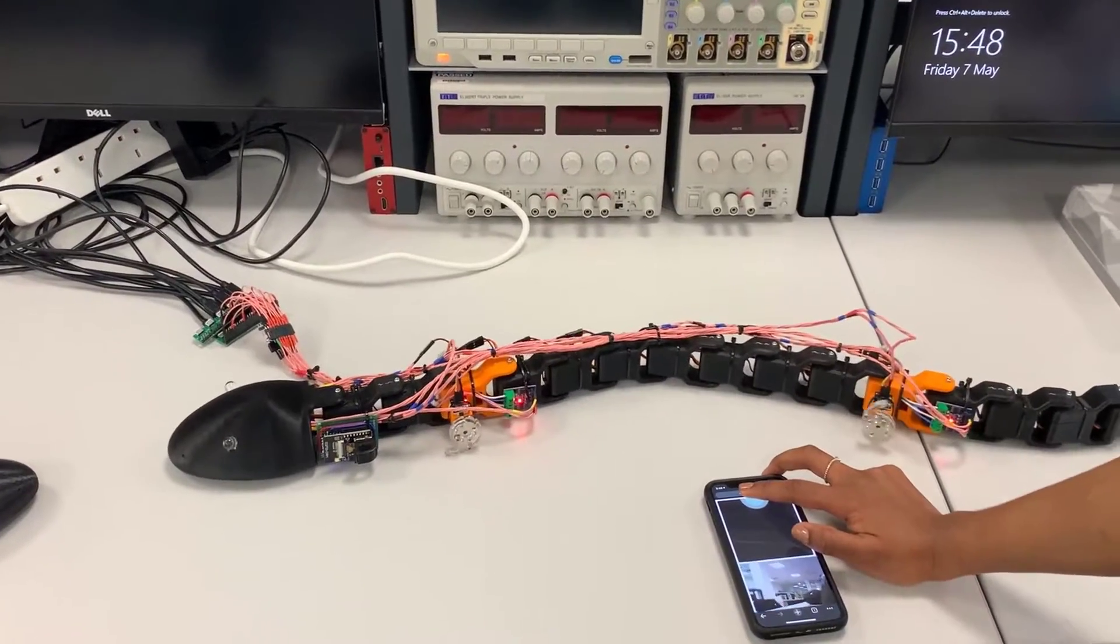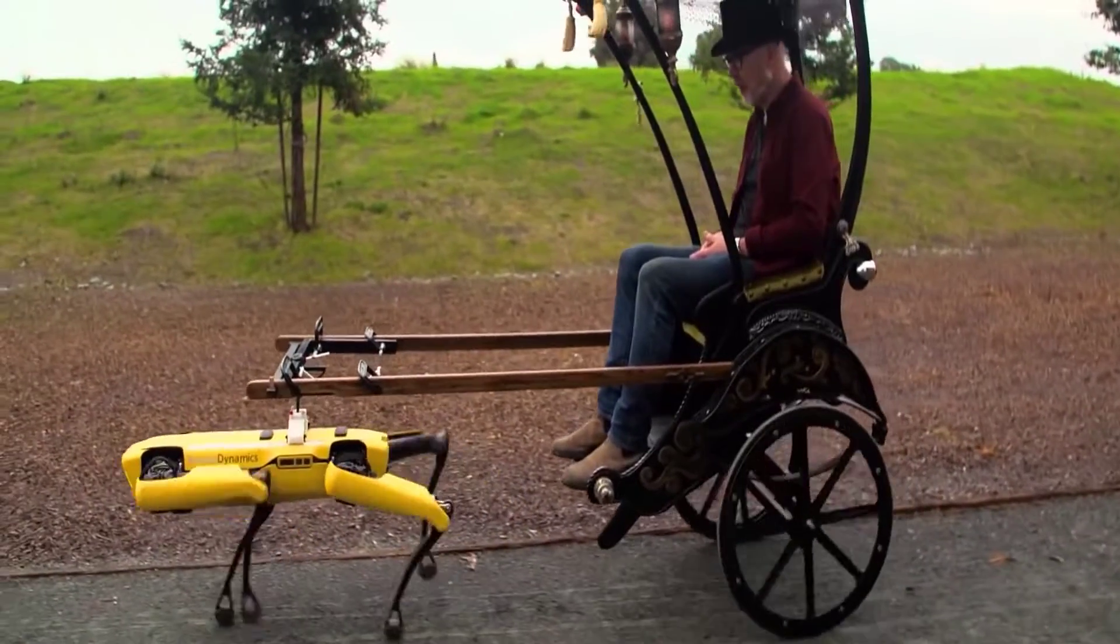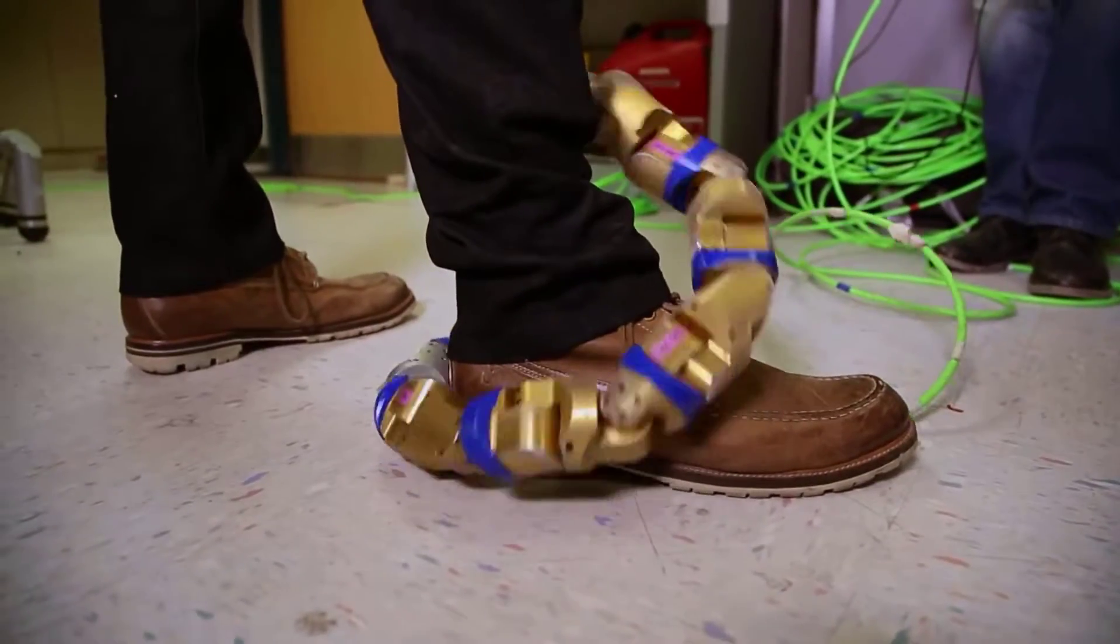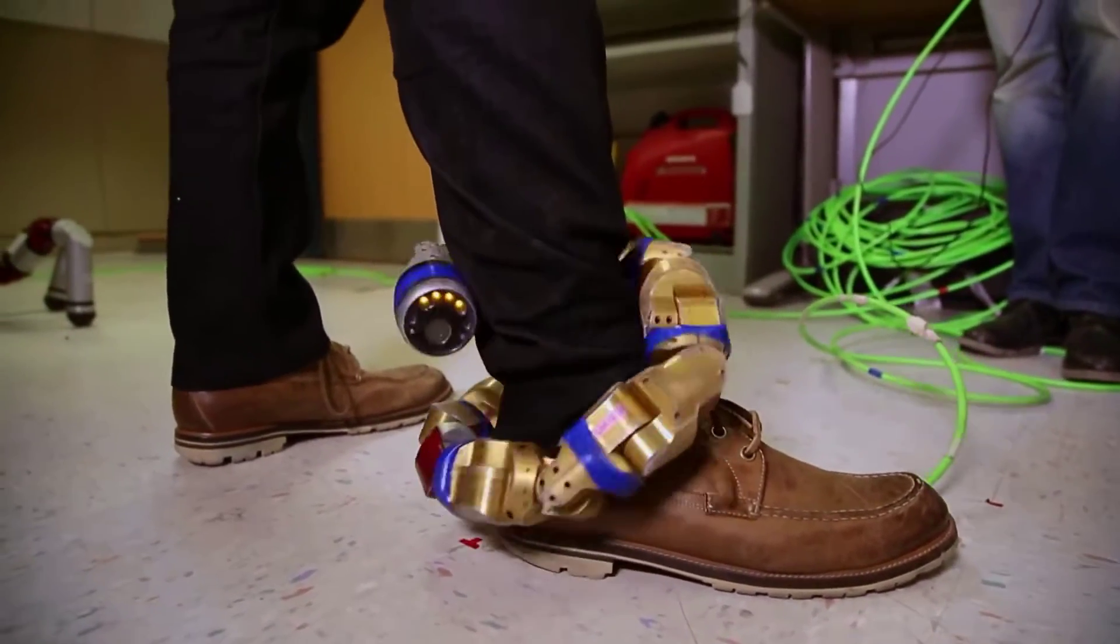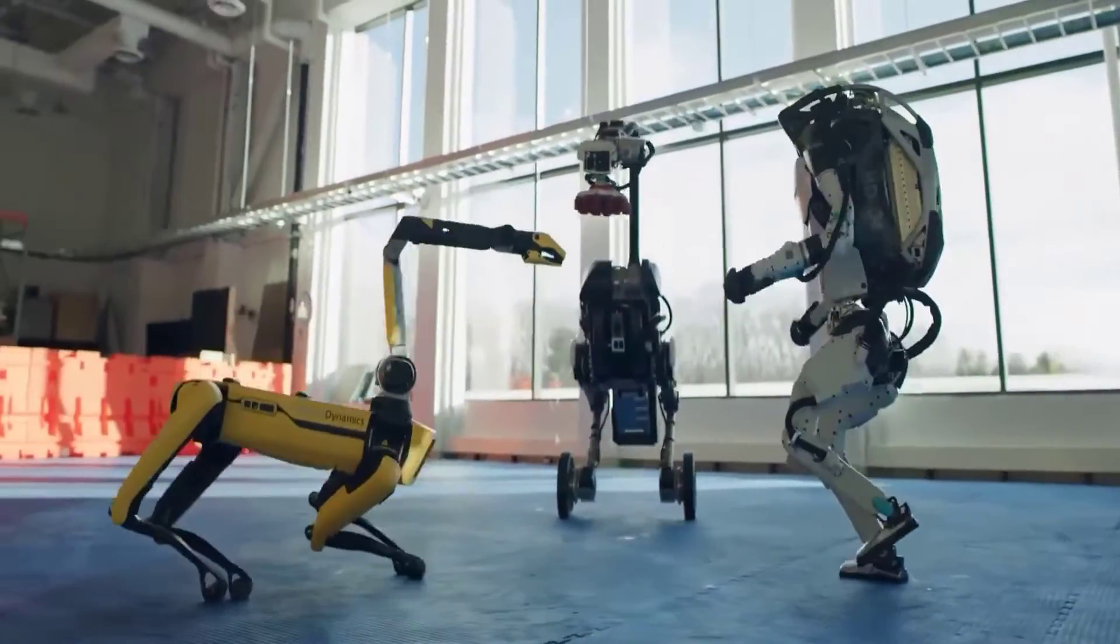When it comes to robots, science fiction has conditioned us to think of androids, bipedal machines approximating the human form. But the next generation of robots may be based on very different types of animals: snakes, flies, locusts, and even multi-tentacled octopuses.